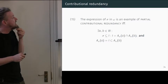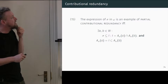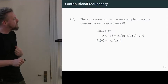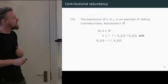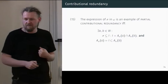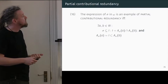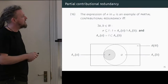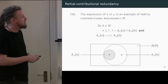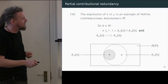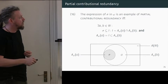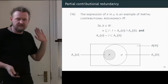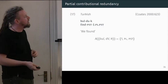Partial contributional redundancy is simply the expression of some category sigma in some word omega being an example of partial contributional redundancy if and only if it's multiple exponents, with the additional clarification that the set of features associated with the first formative is a subset of the set of features associated with another formative. We can visualise that: here's our word, with two formatives a and b both occurring within the word. They need to have an overlap to be multiple exponents — here's their overlap. Not only that, but one is a subset of the other. That's how we define partial contributional redundancy.